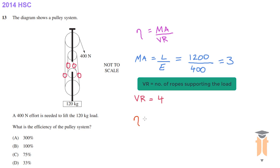My efficiency is now my mechanical advantage which is 3 over my velocity ratio which is 4. Convert that to a percentage by multiplying by 100 and you get 75 percent. Therefore your answer is C.